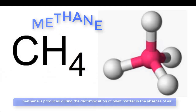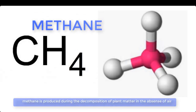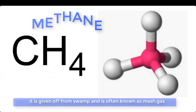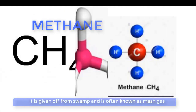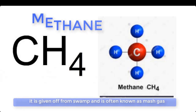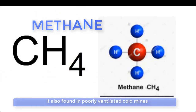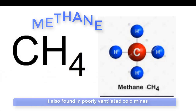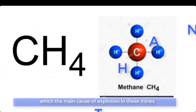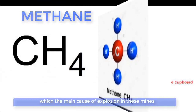Methane is produced during the decomposition of plant matter in the absence of air. It is given up from swamps and is often known as marsh gas. It is also found in poorly ventilated coal mines as the dreaded fire damp, which is the main cause of explosion in these mines.